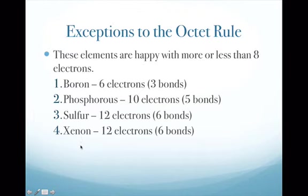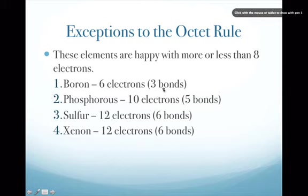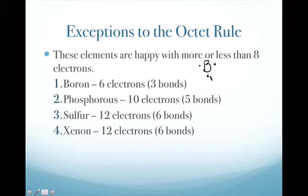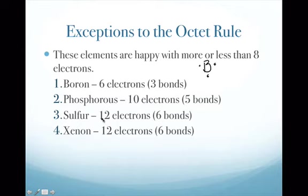Exceptions to the octet rule: hydrogen only wants 2 electrons. Boron is happy with only 6 electrons — it's stable forming just 3 bonds. Phosphorus can have up to 10 electrons around it, and sulfur and xenon can have up to 12 electrons, meaning they can form bonds with up to six other atoms. You can tell it's an exception when your electron count doesn't reach 8 for the central atom, or exceeds it.